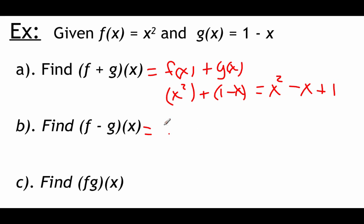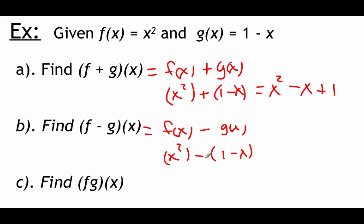Similarly, for subtracting, we take f(x) and subtract g(x). So we're taking x² and subtracting (1 − x). We distribute the negative through that second set of parentheses to make it addition, which is a little easier to work with. There are no other x² terms, so that comes first, then the x term, and then the constant at the end.